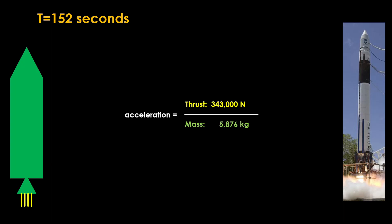This process will continue as more fuel is burned off. At 152 seconds, the last of the fuel is burned. At that point, the mass is only 5,876 kilograms, giving an acceleration of 58.37 meters per second squared. In addition, the rocket has reached an altitude of 100 kilometers, and that is far enough away to reduce the gravity from 9.81 meters per second squared to 9.51 meters per second squared. Do the math, and our net acceleration is 48.86 meters per second squared, or about 5 g's of acceleration. That's how the math works.